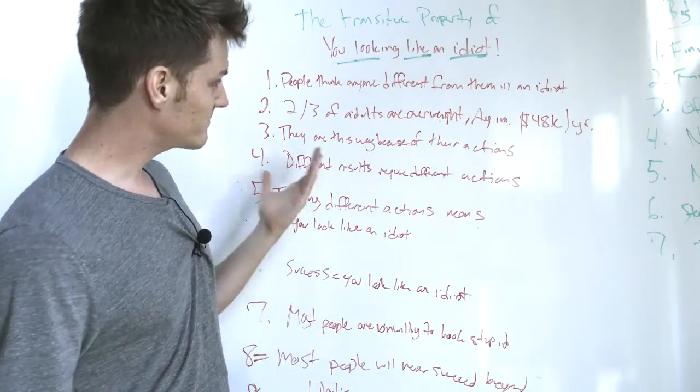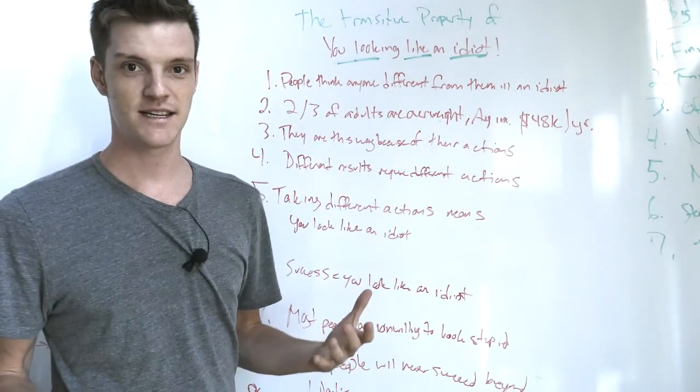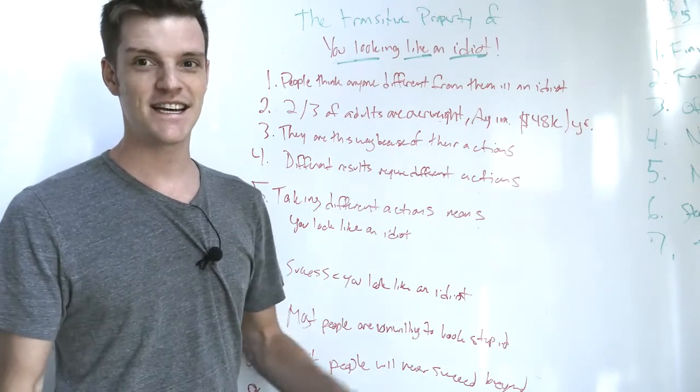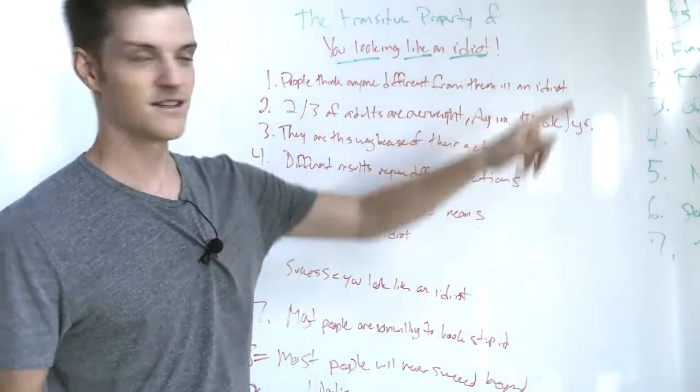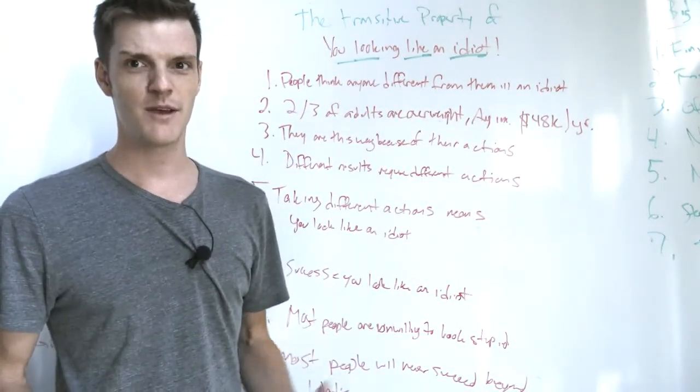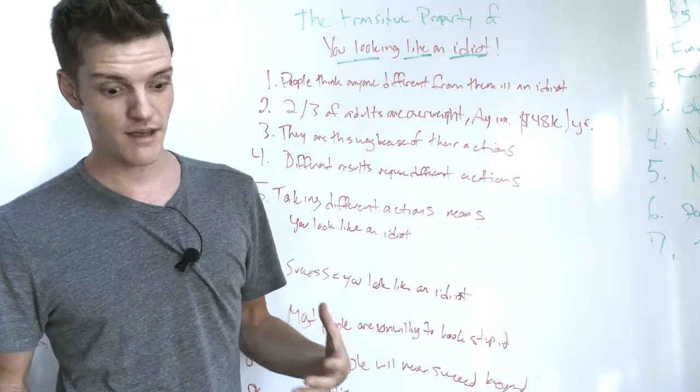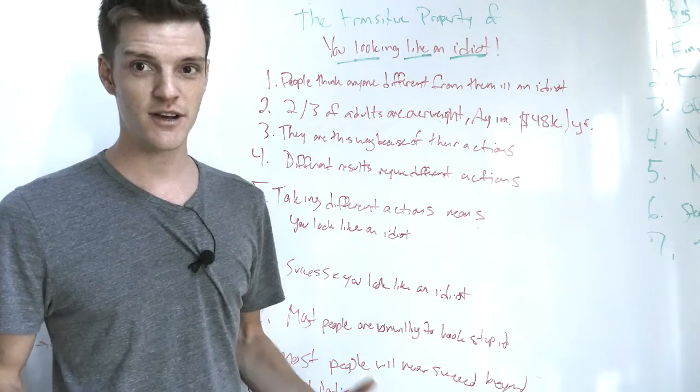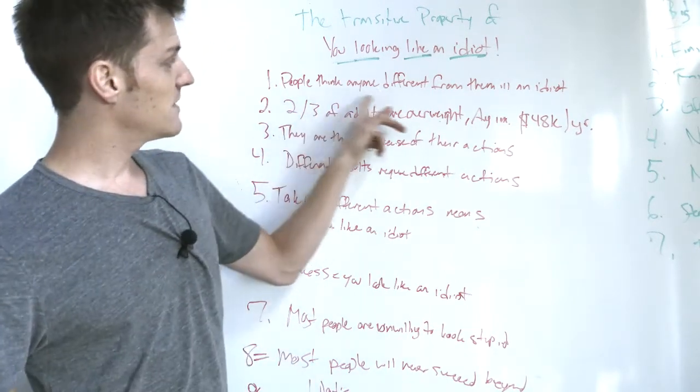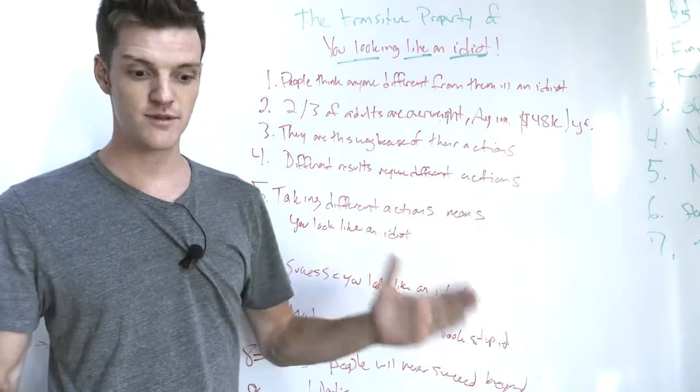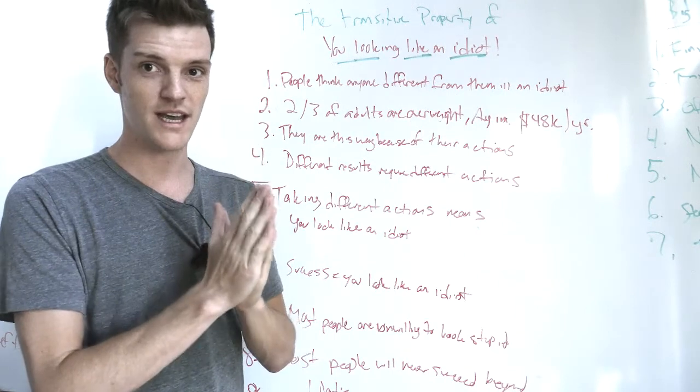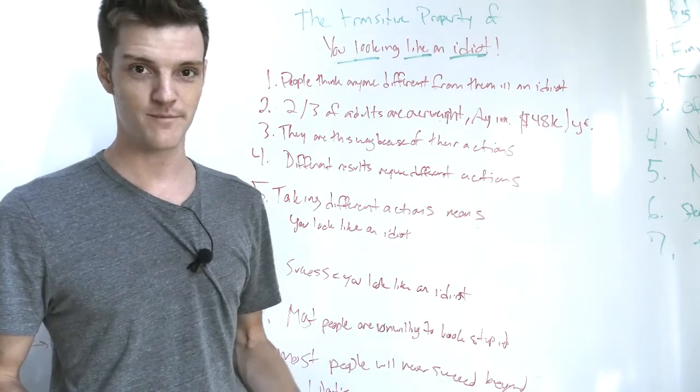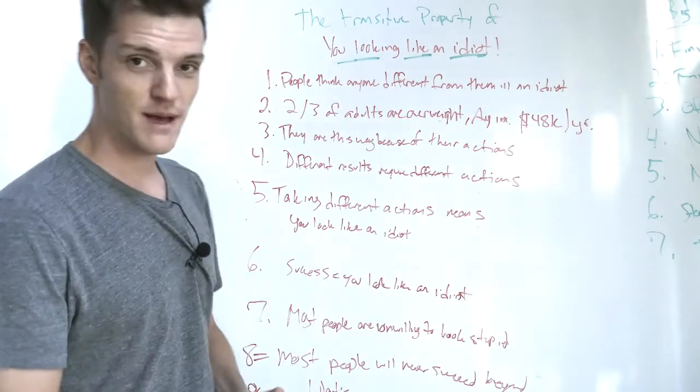Number one on this list is that people think anyone different from them is an idiot. All you have to do is log onto your computer and go on the internet to find evidence of this, because it's pretty much how the internet infrastructure functions. It's just a bunch of people arguing with people that are different from them. But you could also go to a dinner party with friends and start talking politics, or go to your relative's house. You're going to realize that anyone who's different than you, when you start to talk about your values and beliefs, oftentimes those are going to conflict with their values and they're going to think you're an idiot.